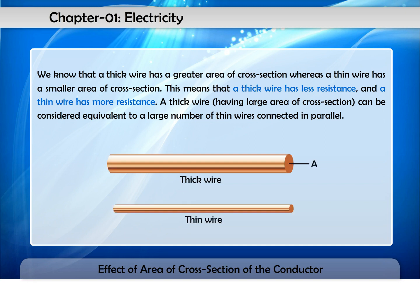We know that a thick wire has a greater area of cross-section, whereas a thin wire has a smaller area of cross-section. This means that a thick wire has less resistance, and a thin wire has more resistance.